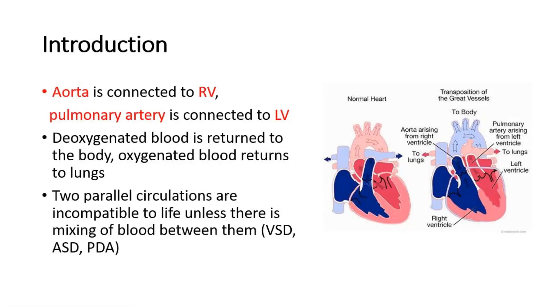In a normal heart, the aorta is connected to the left ventricle and it pumps oxygenated blood to the whole body. Whereas the pulmonary artery is connected to the right ventricle and it pumps deoxygenated blood back to the lungs.